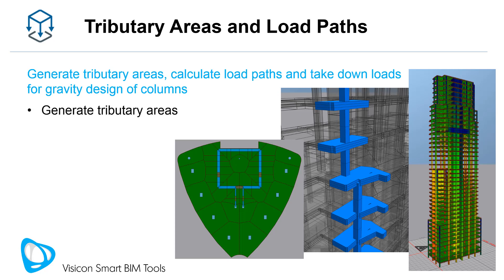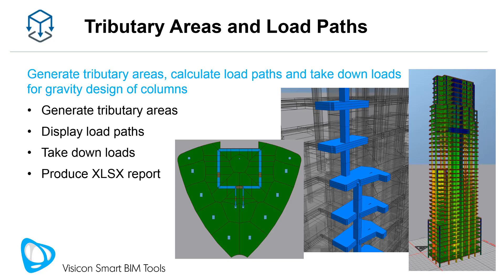Some Visicon users are only interested in the tributary area of each level. Others like the display of load paths to help them better explain their design to other project participants. Tributary areas are taken down and reported in structured Excel reports. The magnitude of column and wall loads is also displayed using a heat map, allowing you to identify heavily loaded members. You can use this fast and flexible load algorithm to back-check your FEM results or use them to run your gravity column designs.